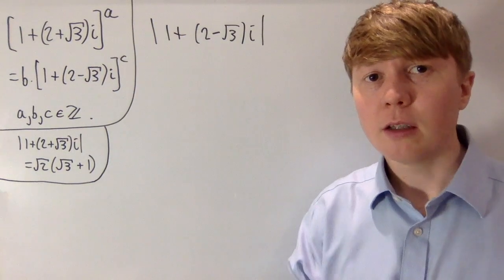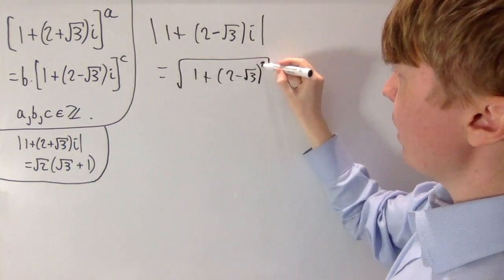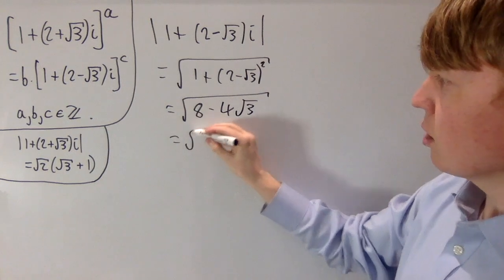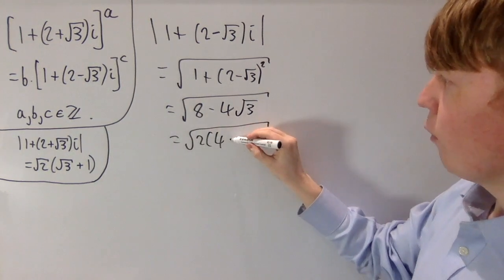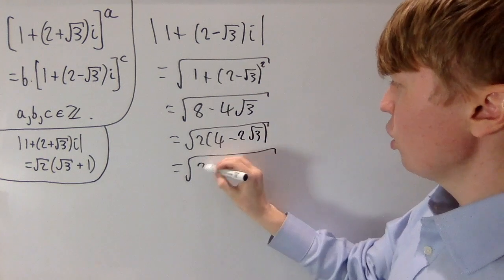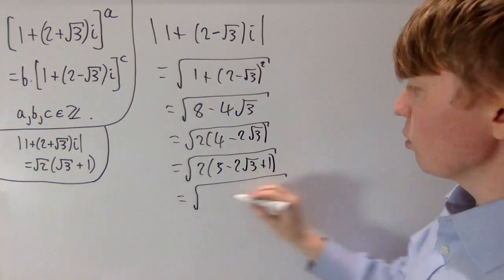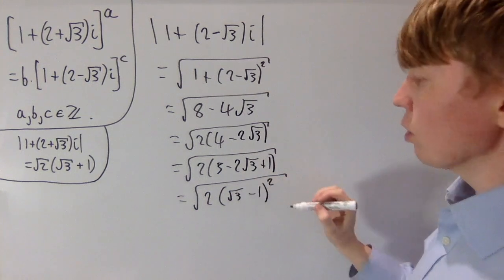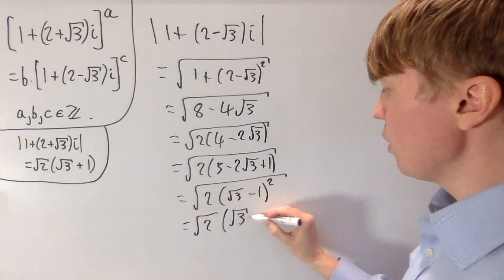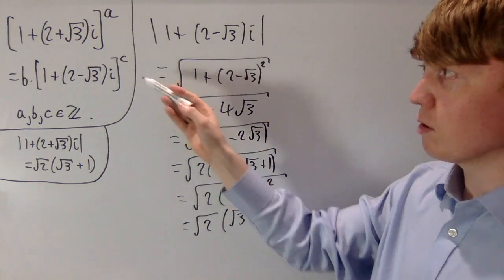The calculations are very similar for our second complex number. Using Pythagoras again, the modulus is the square root of 1 + (2 − √3)², which expands to 8 − 4√3. Using the same trick, we factor out 2 and write 4 − 2√3 as 3 − 2√3 + 1, which is (√3 − 1)². Since √3 − 1 is positive, taking the square root gives the modulus as √2(√3 − 1).